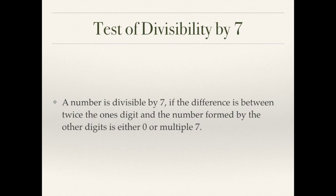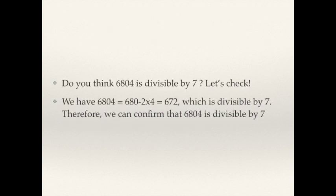Now the most interesting one — divisibility by 7. A number is divisible by 7 if the difference between twice the ones digit and the number formed by the other digits is either 0 or a multiple of 7. For example, take 6804: the last digit is 4, double it to get 8. The remaining digits form 680. Now compute 680 minus 8, which gives 672, and 672 is divisible by 7. Therefore 6804 is also divisible by 7. You can try this with other numbers yourself.